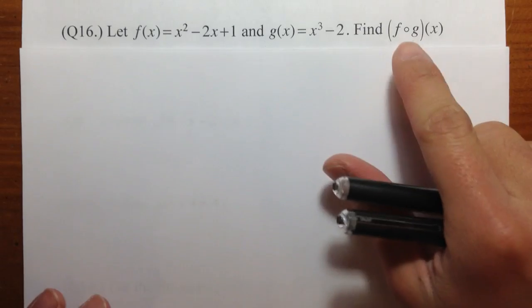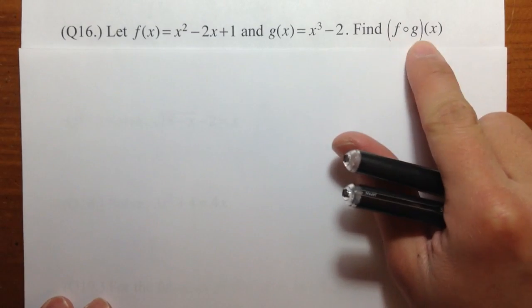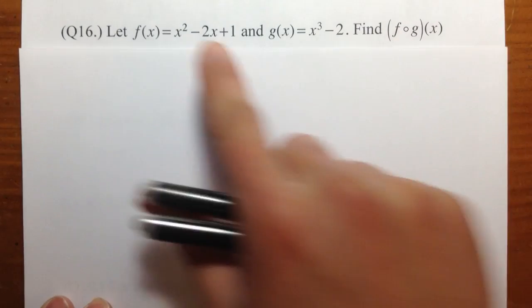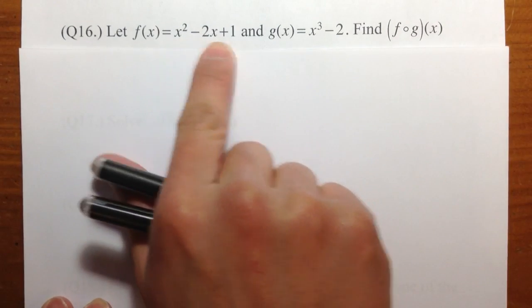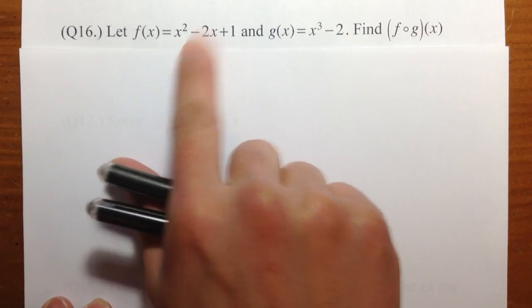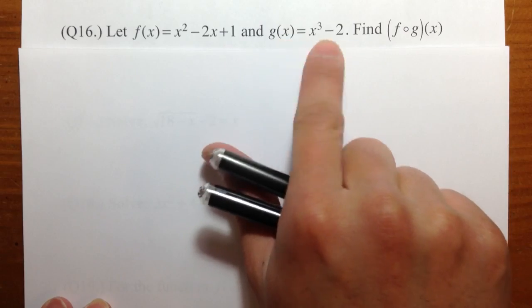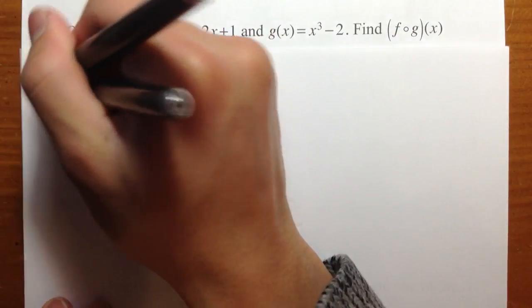For question 16, we are going to do f of g of x, given two functions — this is the function for f, and that's the function for g. And let's get to work.